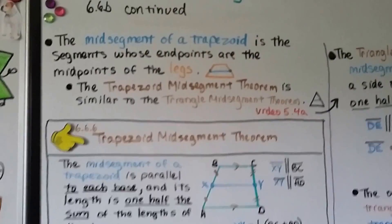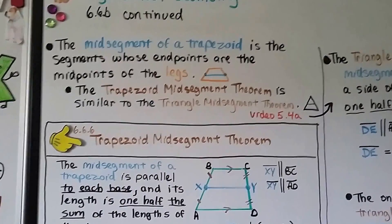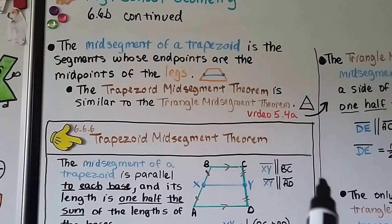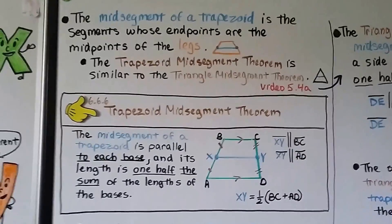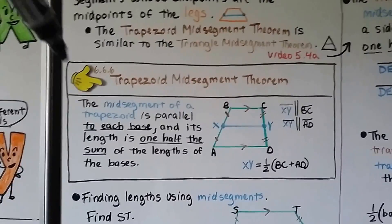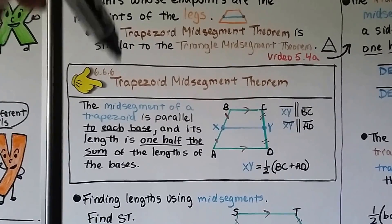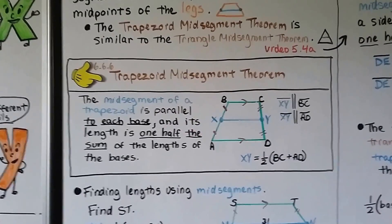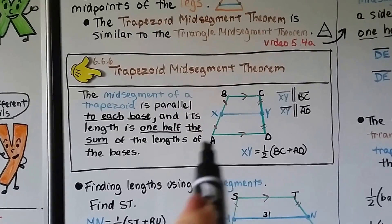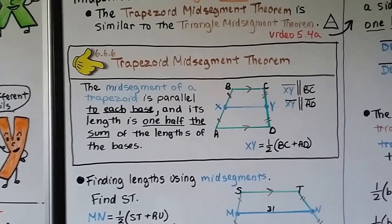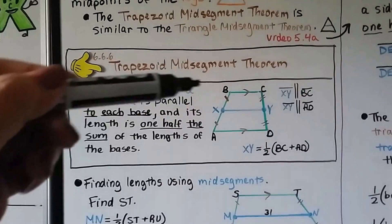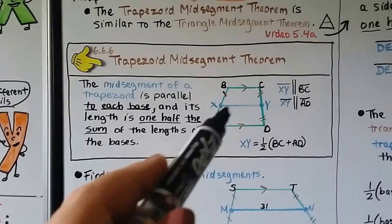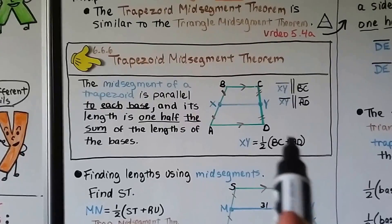The mid-segment of a trapezoid is the segment whose endpoints are the midpoints of the legs. The trapezoid mid-segment theorem — theorem six — states that the mid-segment is parallel to each base, and its length equals one half the sum of the lengths of the bases. So mid-segment XY is parallel to BC and AD, and XY equals one half times (BC + AD).